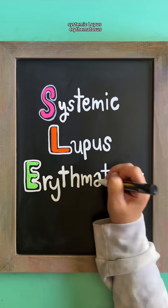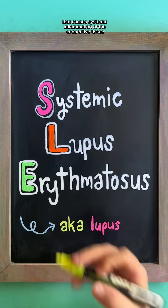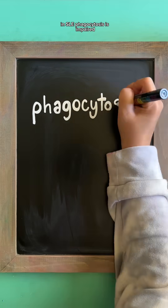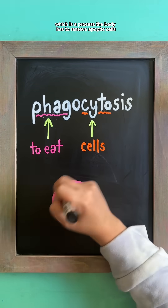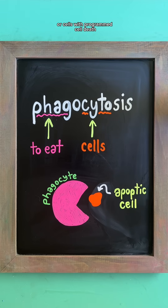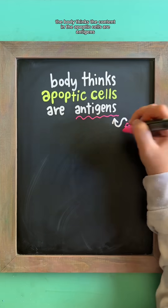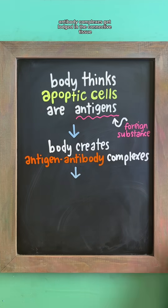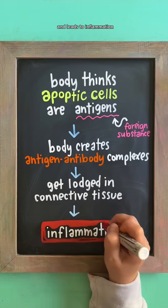Systemic lupus erythematosus is an autoimmune disease that causes systemic inflammation of the connective tissue. In SLE, phagocytosis is impaired, which is a process the body has to remove apoptotic cells, or cells with programmed cell death. The body thinks the content in the apoptotic cells are antigens and creates antigen-antibody complexes, which get lodged in the connective tissue and leads to inflammation.